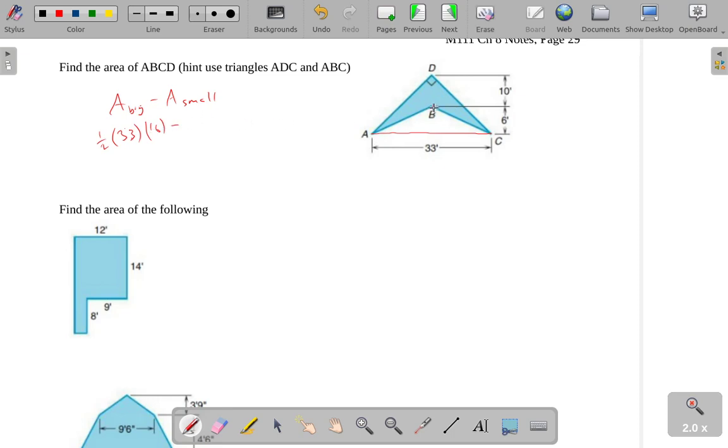The area of the small triangle is, again, going to be one-half times base. 33 is the base. But in this case, the height was only 6 feet.